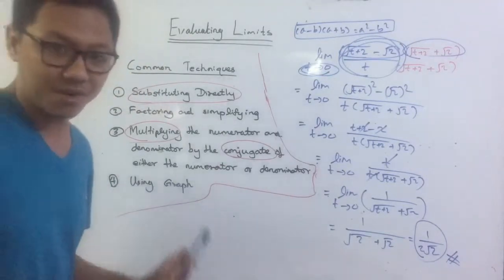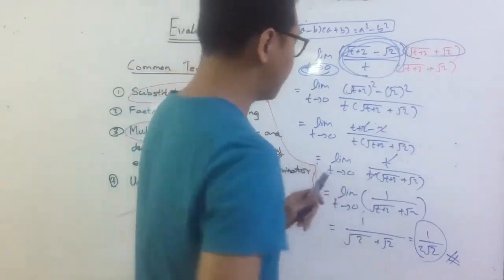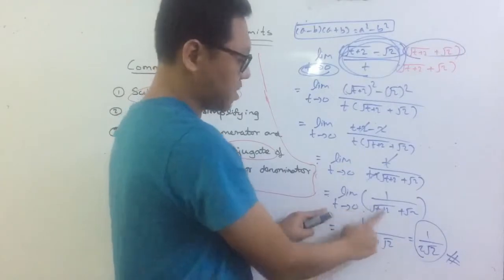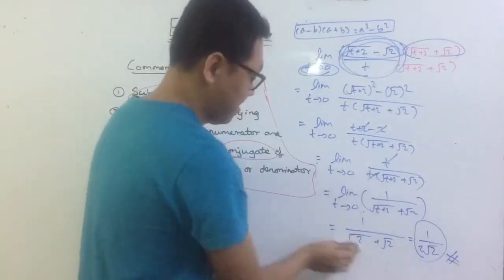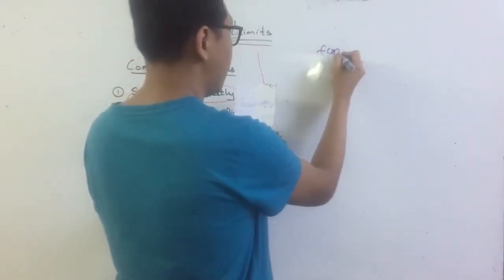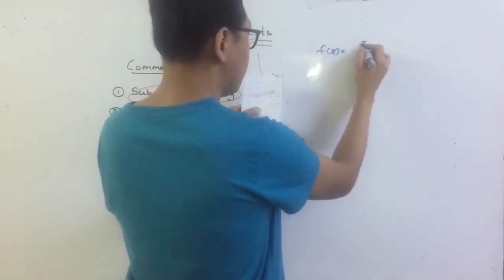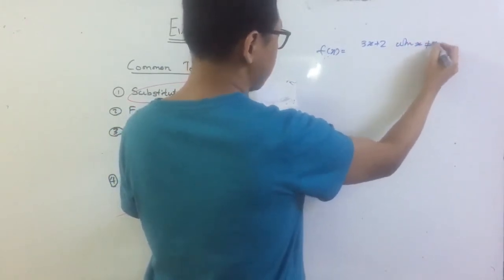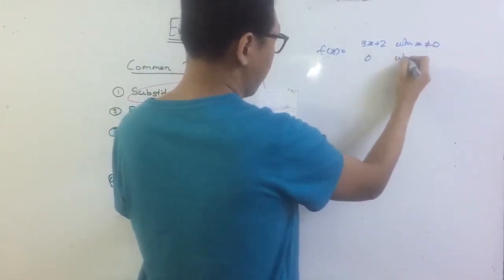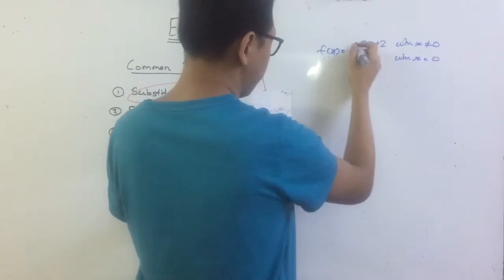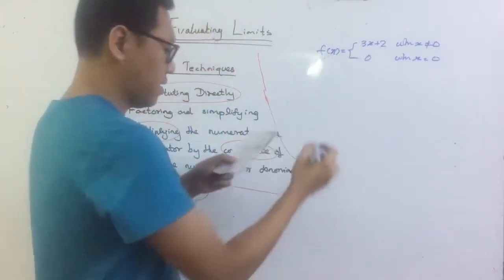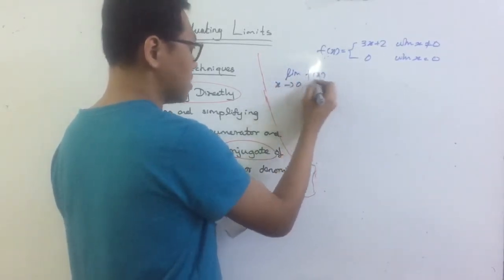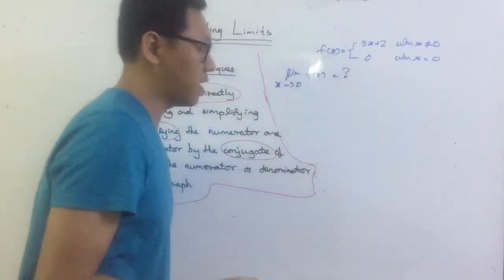Now let me explain the last method - using a graph. Let me show you an example: f(x) equals 3x plus 2 when x is not equal to 0, and f(x) equals 0 when x is equal to 0. The question is: what is the limit of f(x) as x approaches 0?